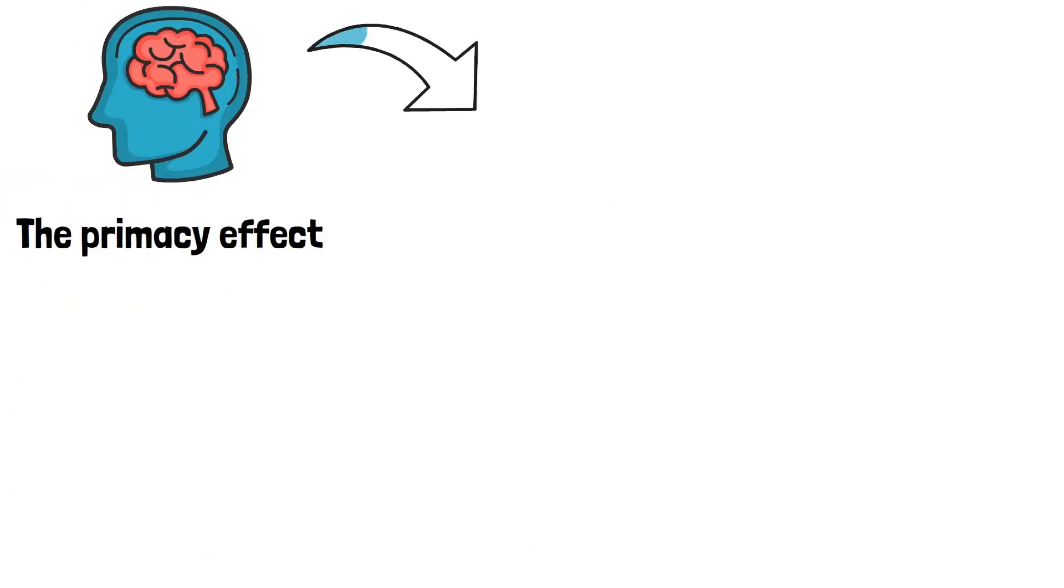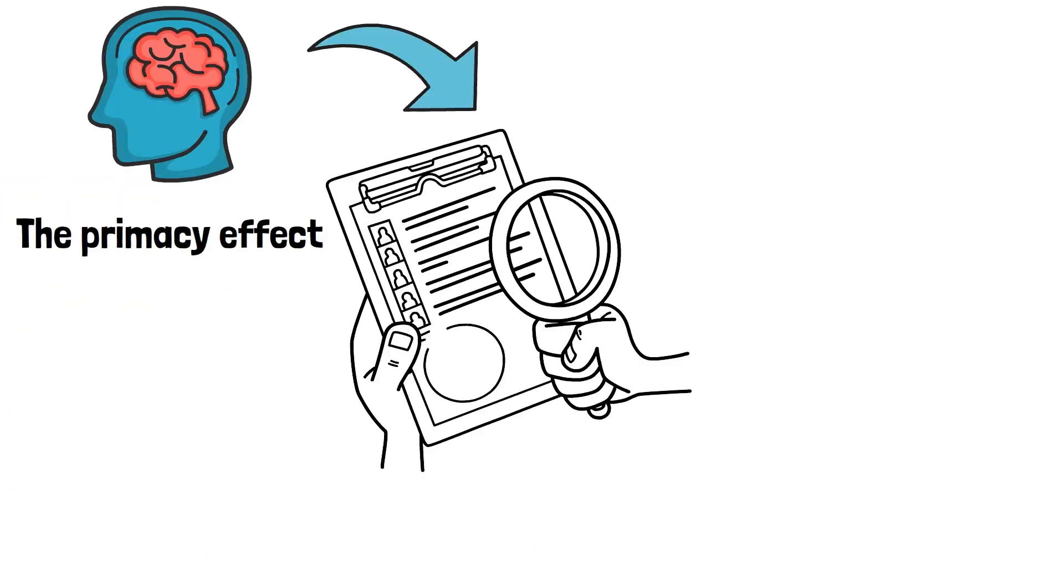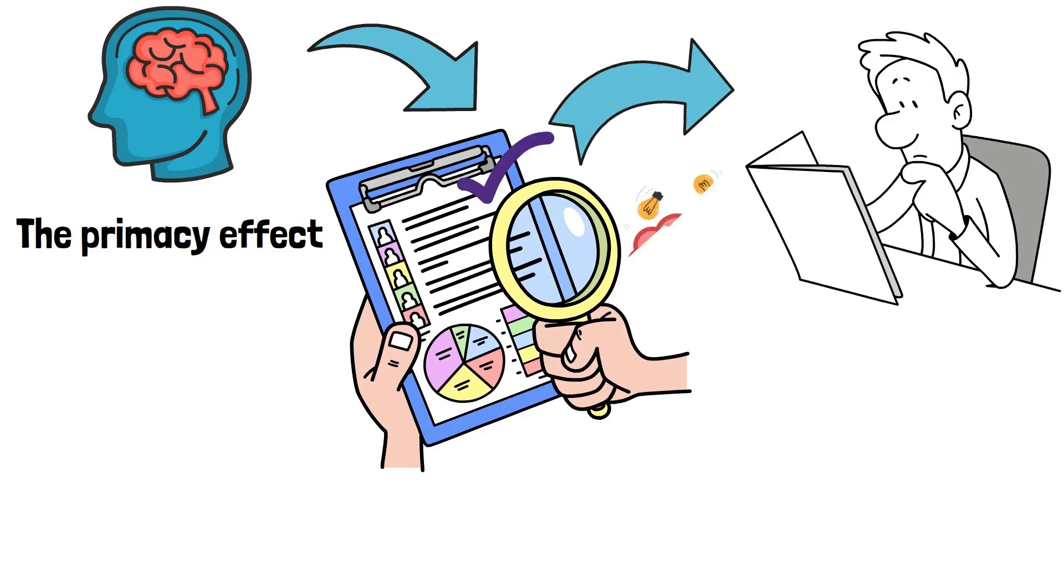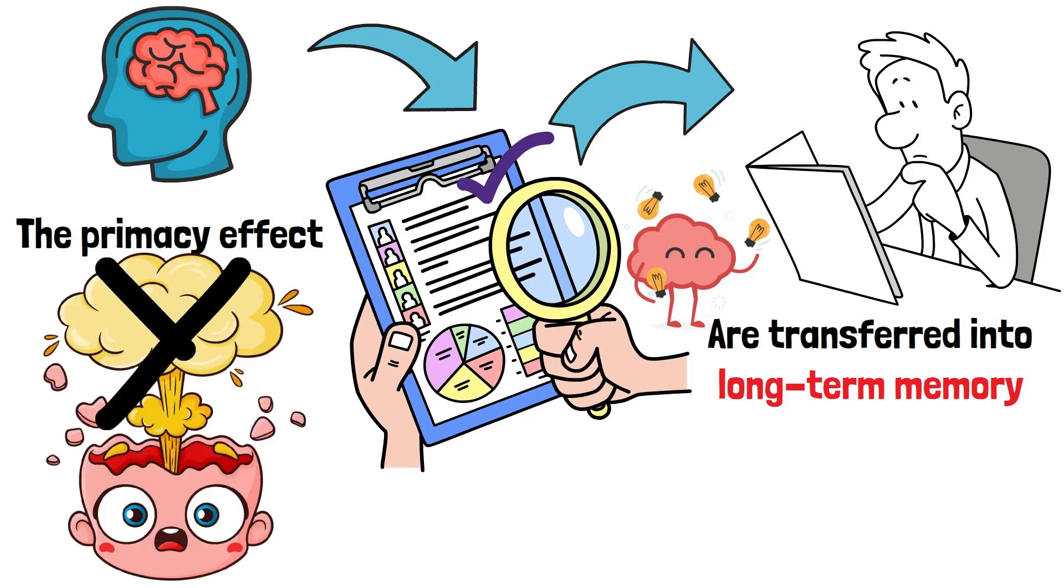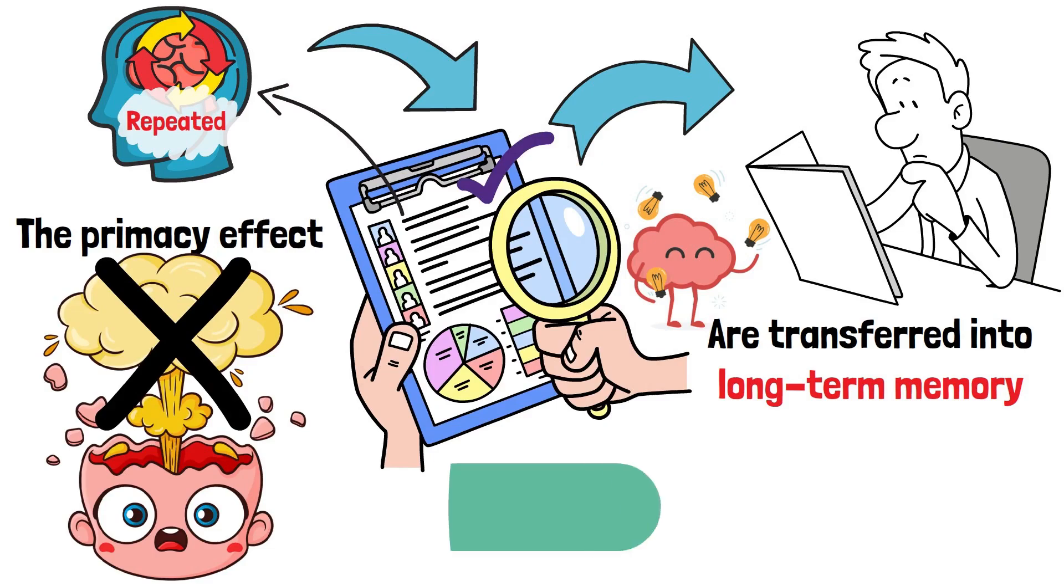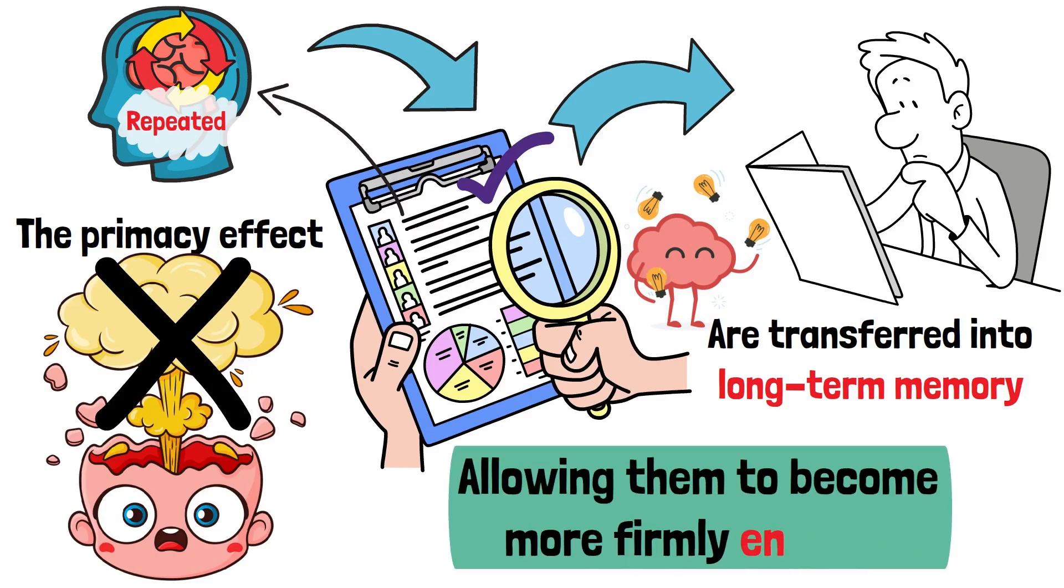The Primacy effect refers to better recall of items presented at the beginning of a list. This happens because early items get more rehearsal and are transferred into long-term memory. When the brain is not yet overloaded with information, the initial items get repeated, allowing them to become more firmly encoded.